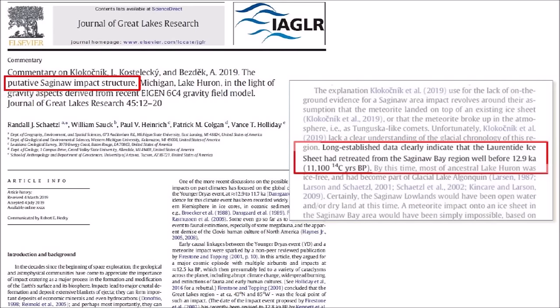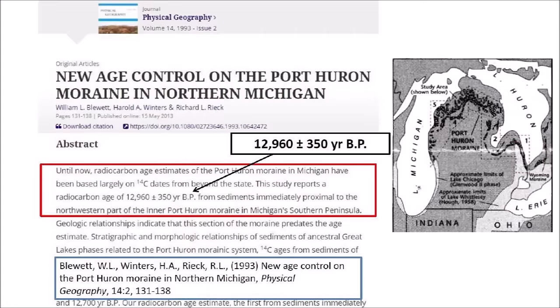The choice of Saginaw Bay as an impact location has been severely criticized on the basis of gravimetric analysis. Additionally, the origin of the Carolina Bays from ice ejected at Saginaw Bay has been contested because the Laurentide Ice Sheet had retreated from that region well before 12,900 years ago. However, several authors report that Saginaw Bay was covered with ice at the onset of the Younger Dryas. A 1993 paper by Blewett, Winters, and Reek reported a radiocarbon age of 12,960 ± 350 years before present from sediments proximal to the northwestern part of the inner Port Huron Moraine, making it very likely the Laurentide Ice Sheet covered Saginaw Bay at the time of the Younger Dryas onset.